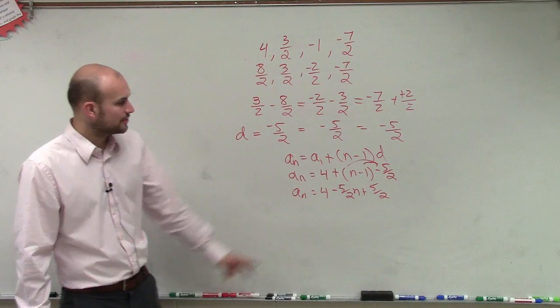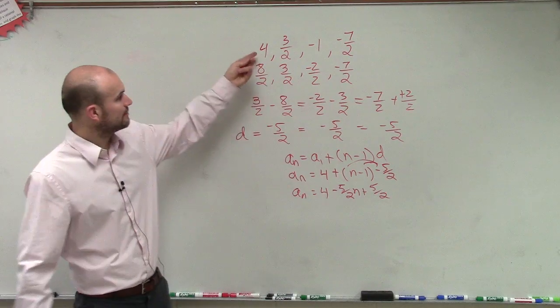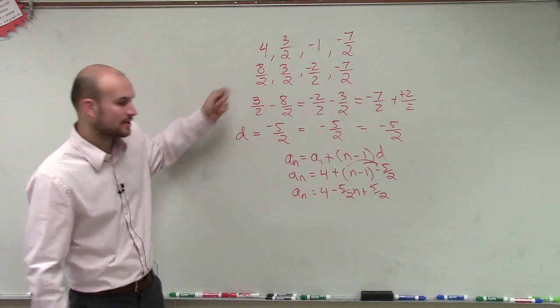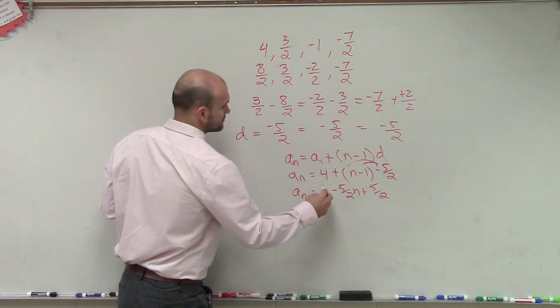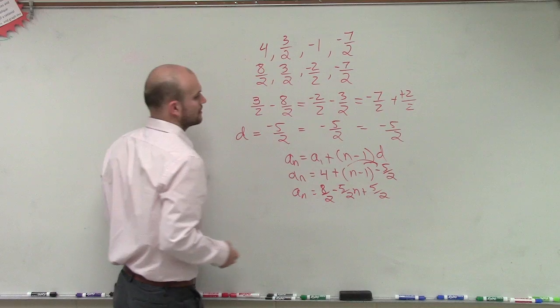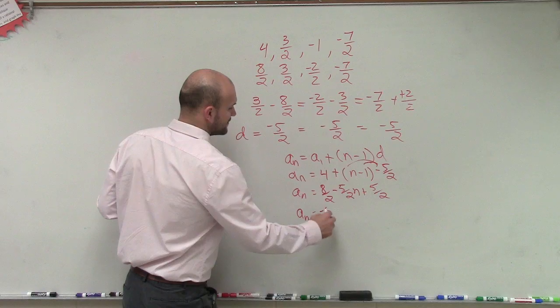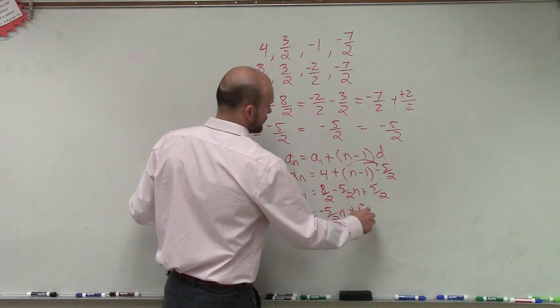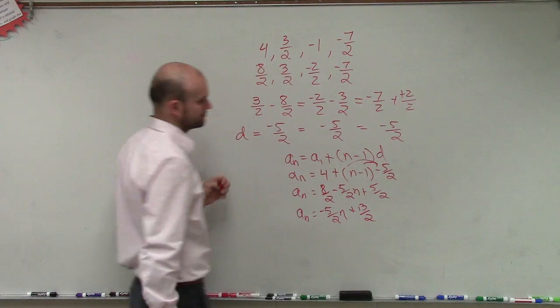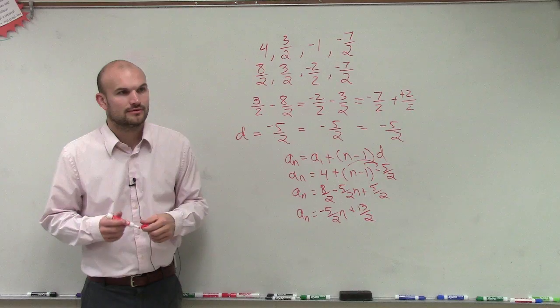So the last thing we need to do is combine the 5 halves and the 4. And remember, we rewrote 4 as 8 halves. So I can rewrite this as 8 halves, and then a sub n equals negative 5 halves n plus 13 over 2. And that would be your final formula.